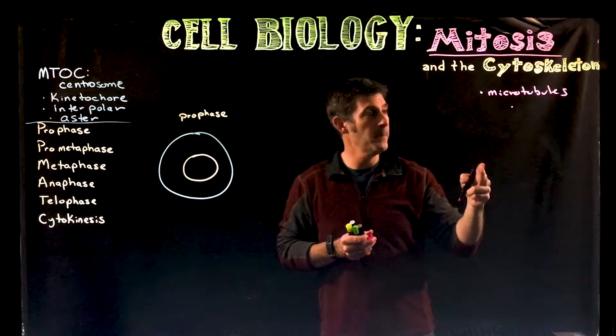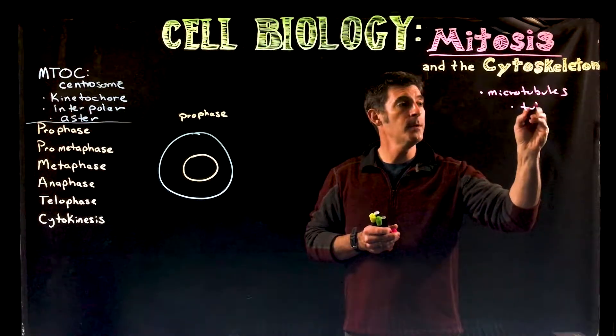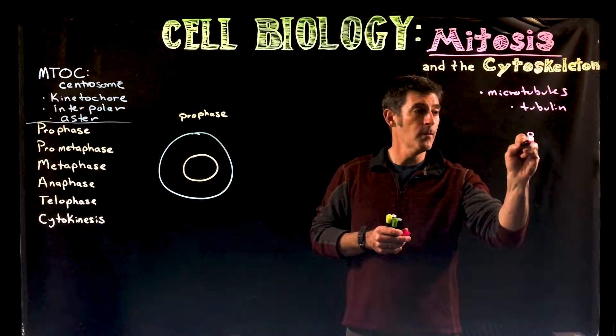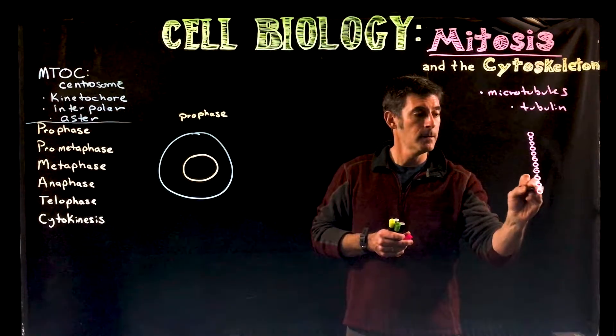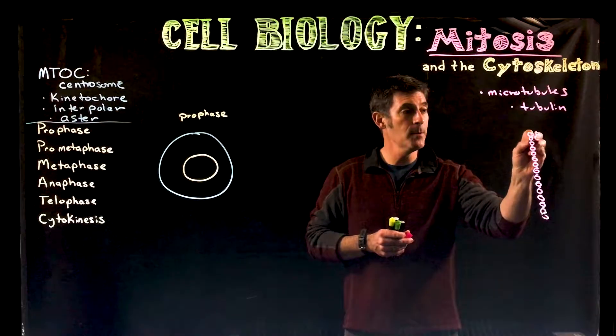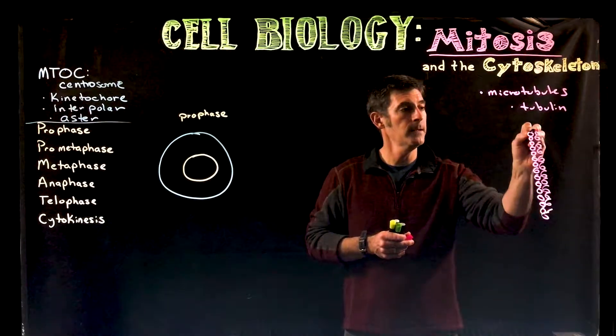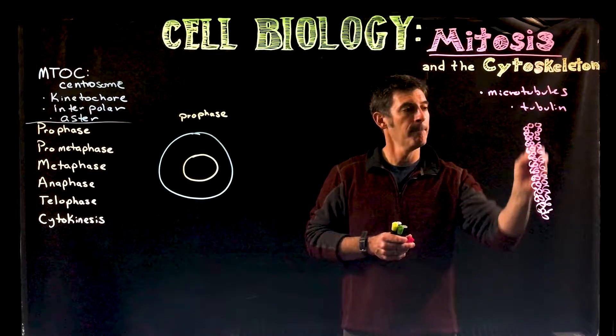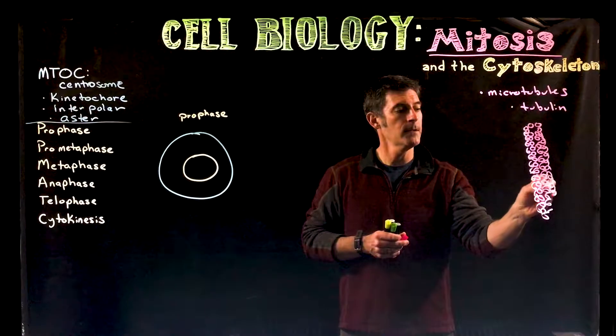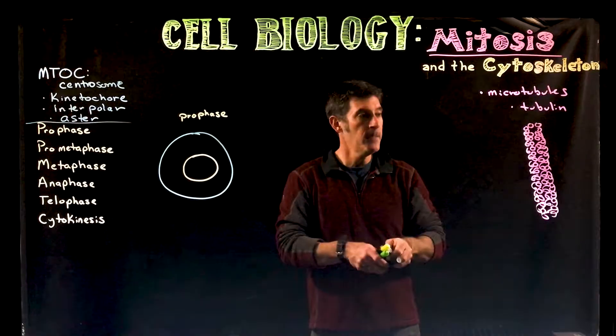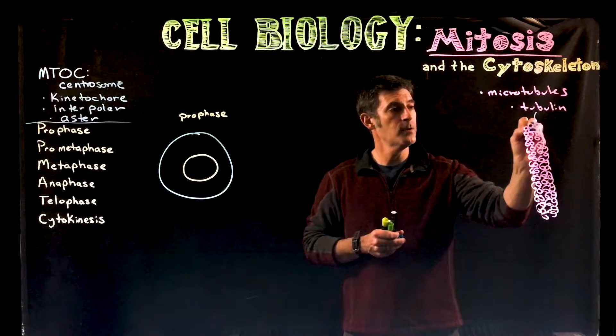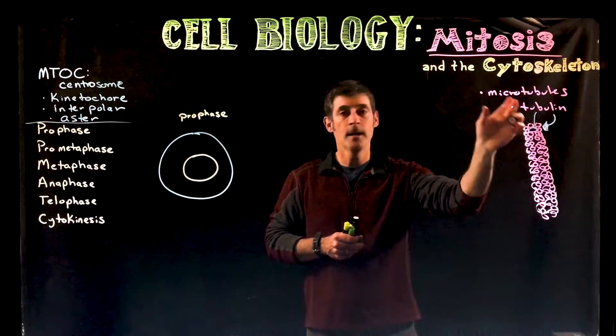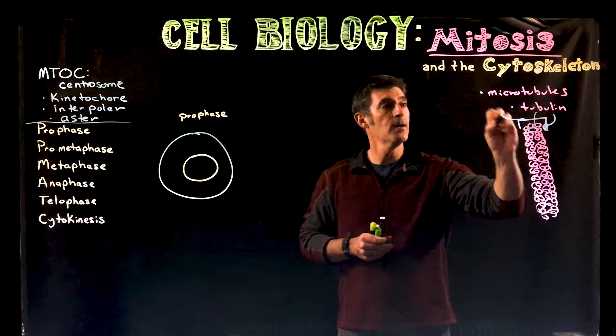So the microtubules, to give you a little extra information, are polymers of a protein called tubulin. And there are really two types of tubulin, an alpha and a beta tubulin. And they repeat sort of over and over and over again to make these chains. And then the chains assemble with other chains. So I'll try to get this here quickly to give you an idea. And the chains, as they assemble three-dimensionally, just give you an idea that each of these is individual tubulin, and then they actually form a hollow tube.